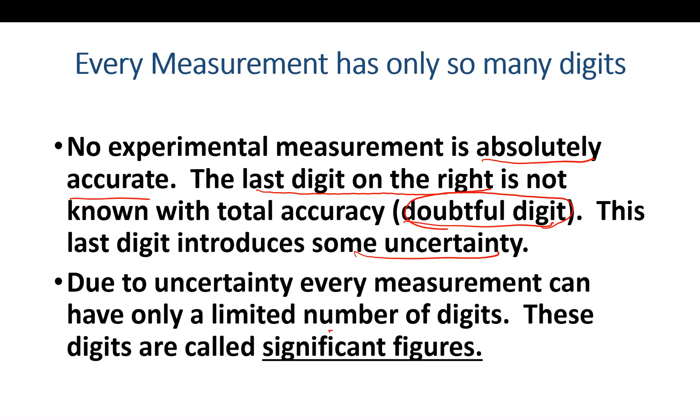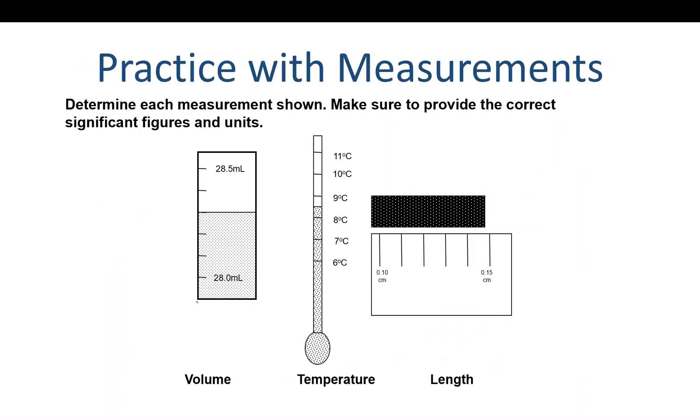And due to this uncertainty, every measurement can only have a certain number of digits that we can write out. We'll get into that topic next time. The next topic we'll be talking about is significant figures and how we can determine how many significant figures in a measurement or a calculation. But for now, we just know that the last digit is a doubtful digit and there's always some level of uncertainty.